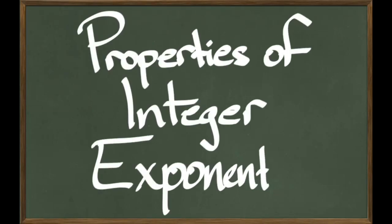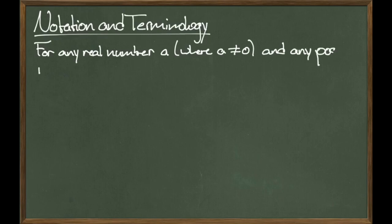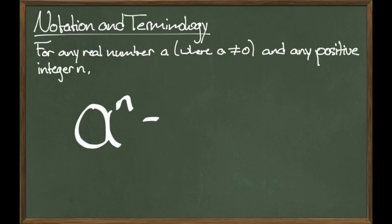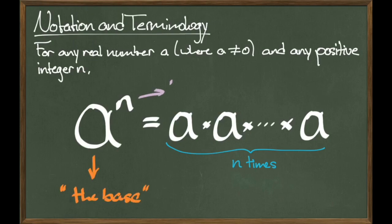In this video, we will discuss properties of integer exponents. For any real number a where a is not equal to 0, and for any positive integer n, we define a to the n as the product of a multiplied by itself a total of n times. In this context, a is called the base and n is called the exponent. The exponent is often referred to as a power, so a to the n is sometimes called a to the power n.